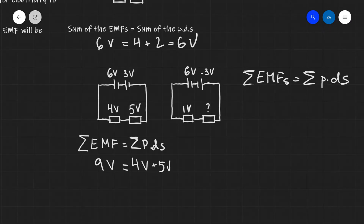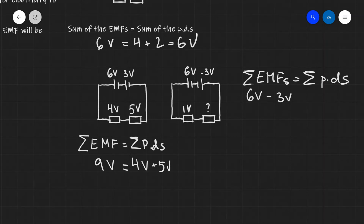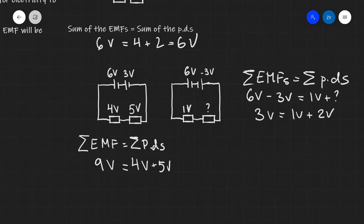In our second example, the cell has been switched around — here negative is connected to negative, so our second cell will no longer be 3 volts, but minus 3 volts. Applying Kirchhoff's second law, the sum of the EMFs will be 6 volts minus 3 volts. This will equal 1 volt plus some unknown quantity, which means that unknown will have to be 2 volts. So the PD across our second resistor will be equal to 2 volts.